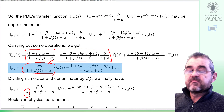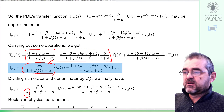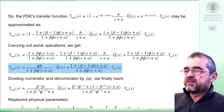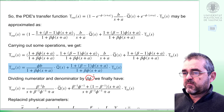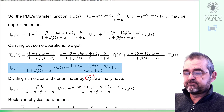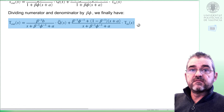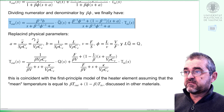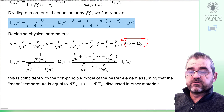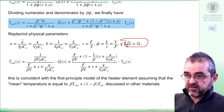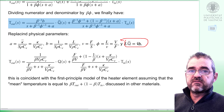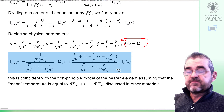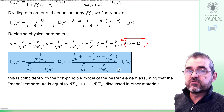In order to isolate s and identify the pole of the dynamics, we divide numerator and denominator by beta·phi, obtaining this final expression. Replacing the physical parameters and multiplying the heating power per unit length by the total length to get total heating power q, we get this expression as a first-order approximation of the PDE solution.